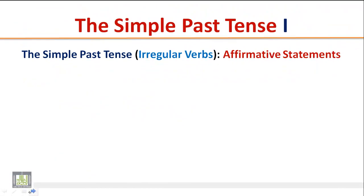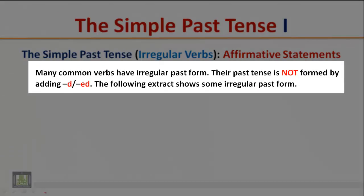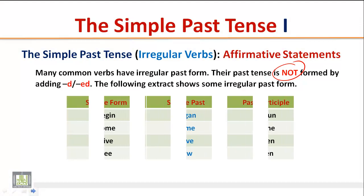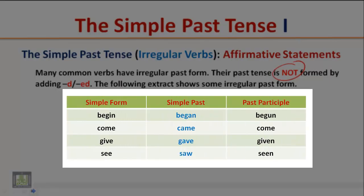The Simple Past Tense: Irregular Verbs, Affirmative Statements. Many common verbs have irregular past forms. Their past tense is not formed by adding D or ED. The following extract shows some irregular past forms. This is the Simple Form, this is the Simple Past, and this is the Past Participle. So the second column includes the Simple Past Form.